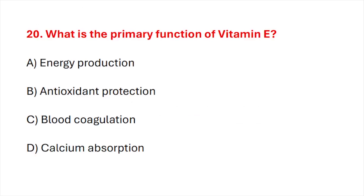Question number 20. What is the primary function of vitamin E? Correct answer is option B: Antioxidant production.